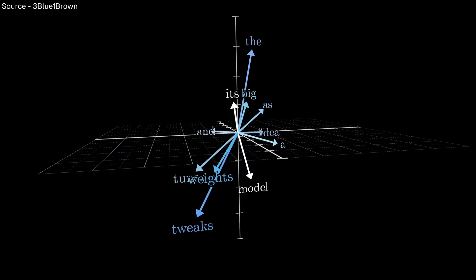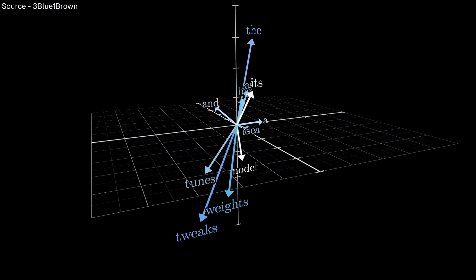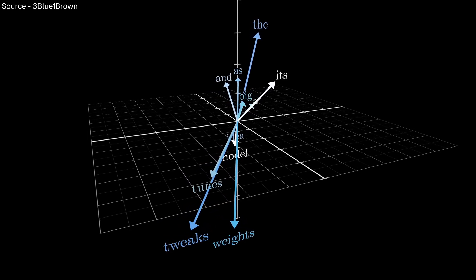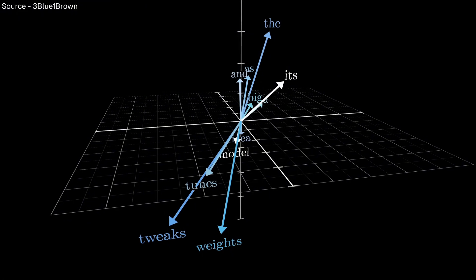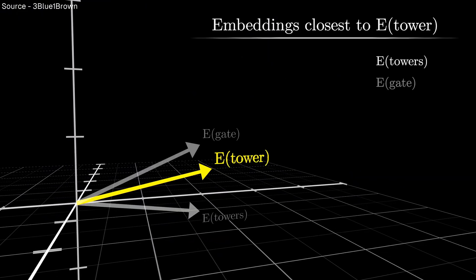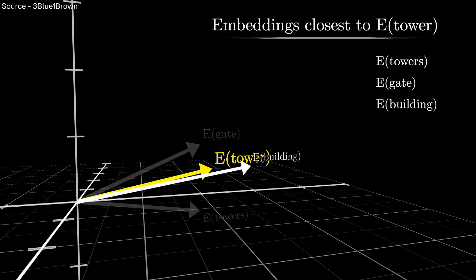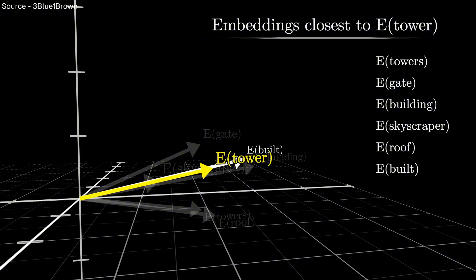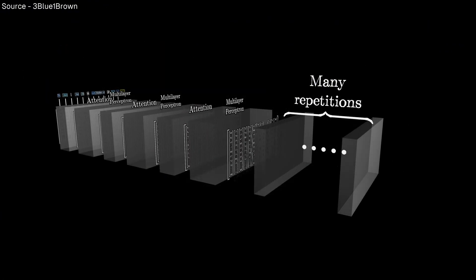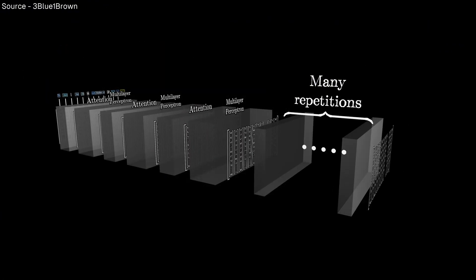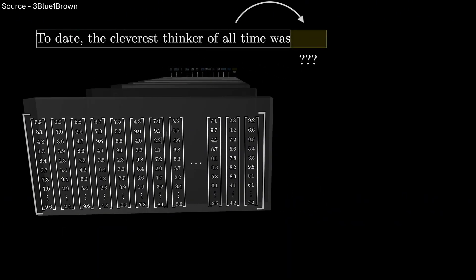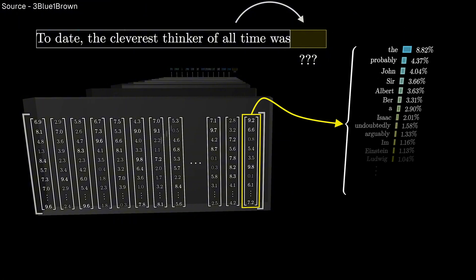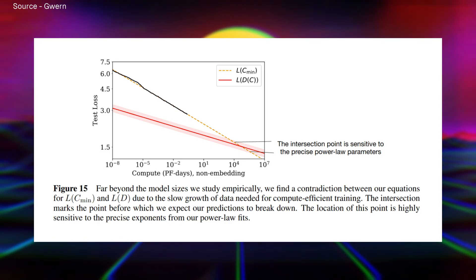The fascinating part, as Gwern points out in his analysis, is that none of these capabilities were explicitly programmed. The model is just trying to predict the next word in a sequence, but to do that well at scale, it has to develop increasingly sophisticated internal representations of how language and knowledge work. This mirrors how human intelligence might have evolved, not through the sudden emergence of specialized modules, but through the gradual scaling up of pattern recognition capabilities.